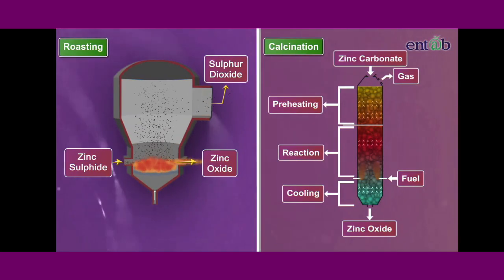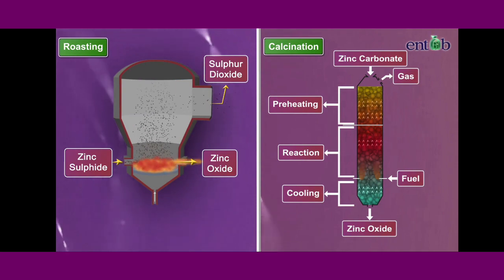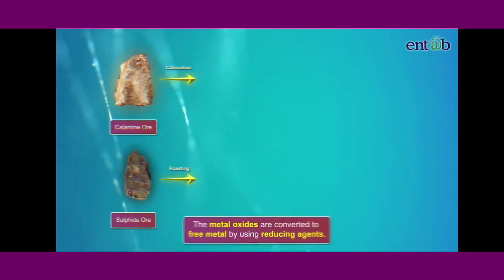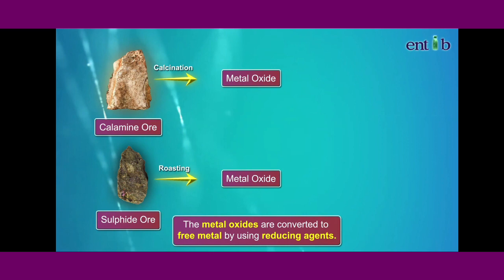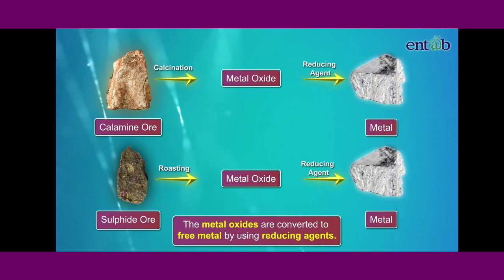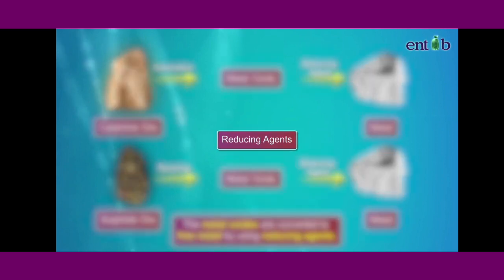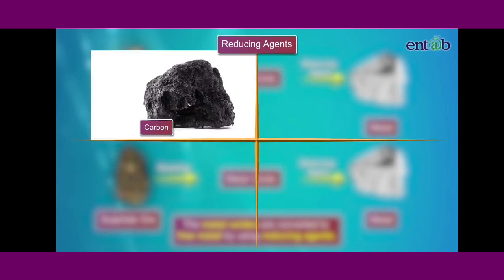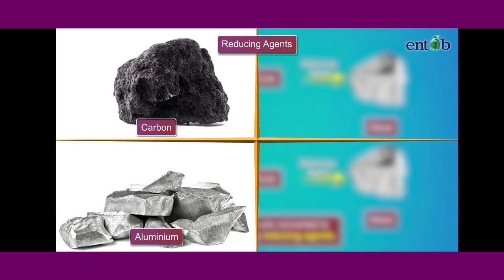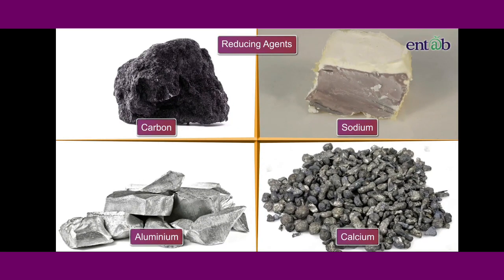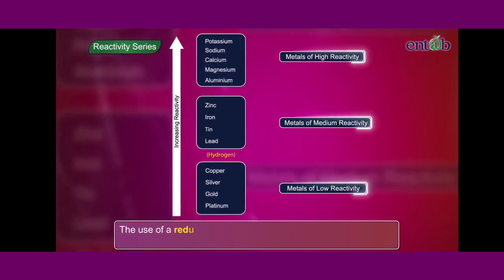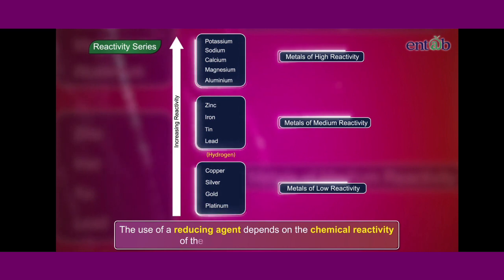Both the processes result in the formation of metal oxide. The metal oxides thus obtained are converted to the free metal by using reducing agents like carbon, aluminium, sodium or calcium. The use of a reducing agent depends on the chemical reactivity of the metal which is to be extracted.